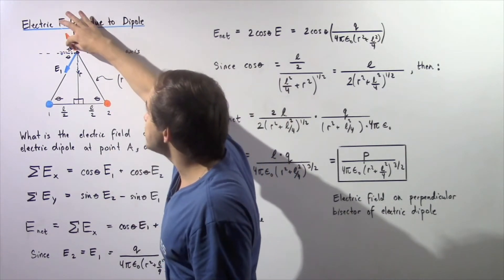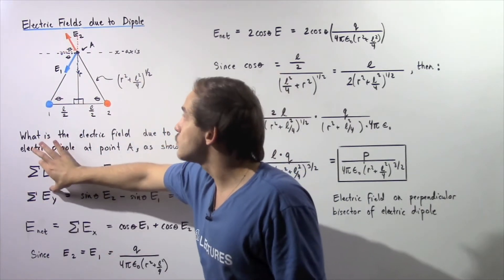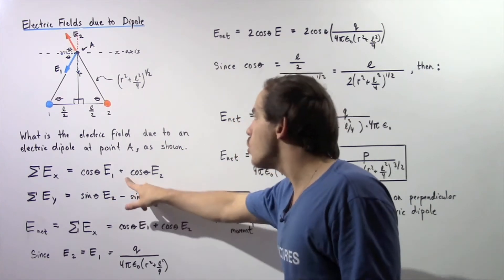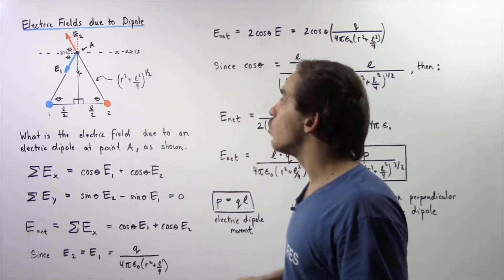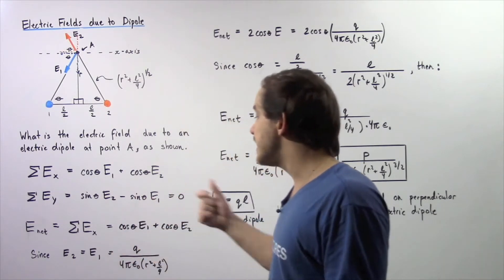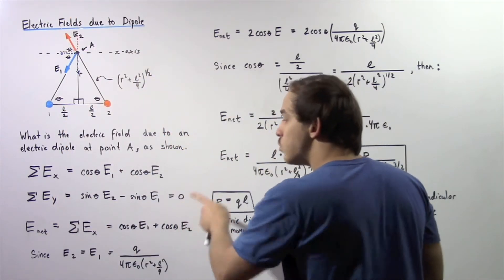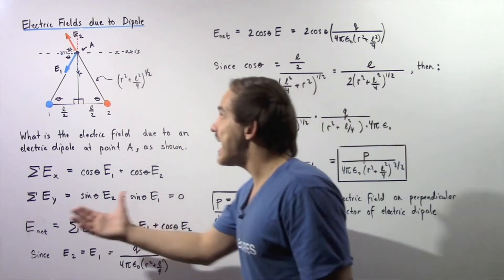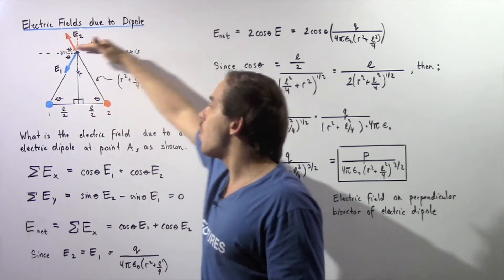Both electric field vectors make angle theta with the x-axis, so the sum of the electric field along the x-axis equals cosine(theta) times E1 plus cosine(theta) times E2. Along the y-axis, we have sine(theta) times E2 minus sine(theta) times E1, which equals zero because E1 equals E2. So there is no net electric field along the y-axis — there is only an electric field along the x-axis.